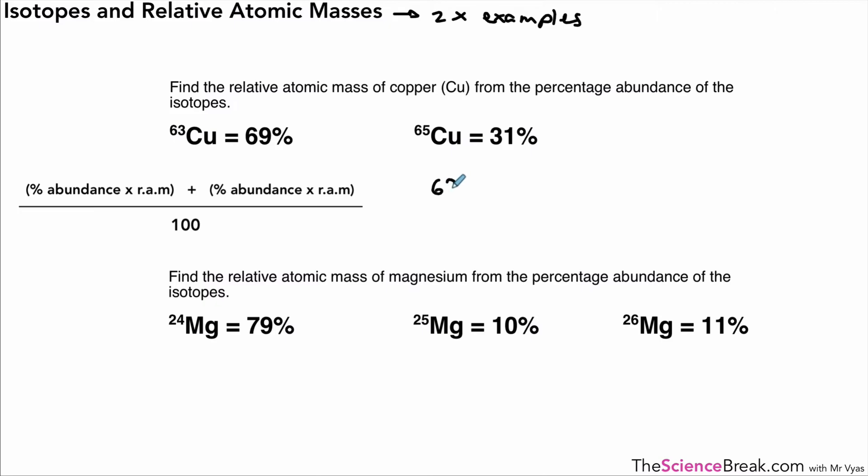Using our calculation from before, for copper (Cu), we get (69 × 63) + (31 × 65). Work out those values, add them together, divide by 100, and you get 63.31. This is the relative atomic mass based on the percentages of each isotope given.